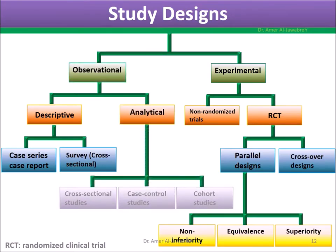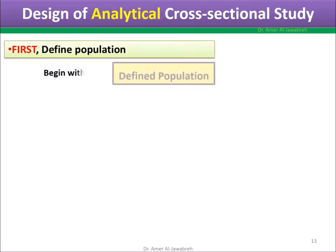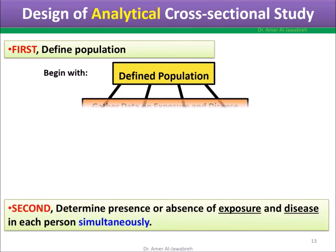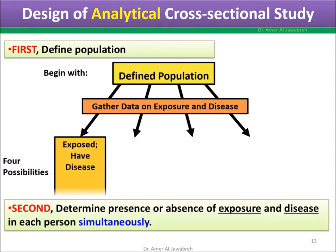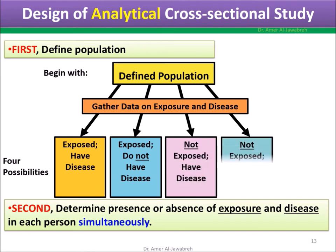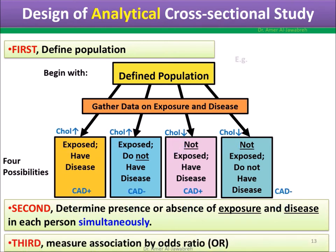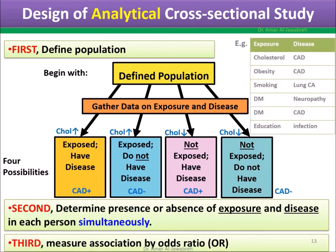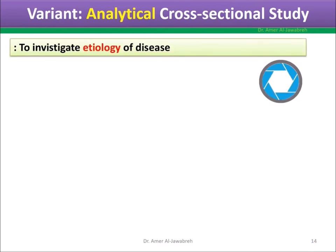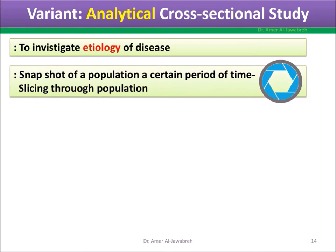Analytical cross-sectional studies. This design is an observational analytical type. Study design: First, define your population. Second, determine presence or absence of exposure and disease in each person simultaneously, with four possibilities. Third, measure association by odds ratio. This design is used to investigate the etiology of a disease.